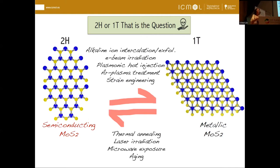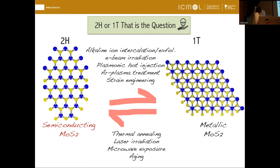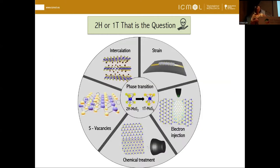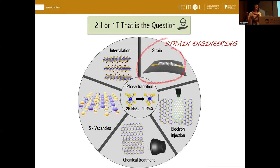The 2H phase is thermodynamically more stable — we find it like this in nature. Chemical exfoliation with intercalation induces some doping and converts it to the 1T phase. By heating we can come back to 2H, but by cooling down we don't return to 1T. There is one approach that is especially interesting: strain engineering — the application of strain. With this, you can not only change from 1H to 1T, which is quite difficult, but also modulate the band gap of the material, which is very interesting.